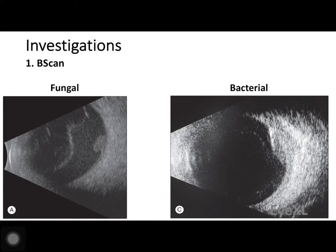For investigations, a B-scan ultrasound of the entire eyeball is performed to examine the posterior segment. On B-scan, fungal endophthalmitis shows a fungating, mushroom-shaped exudate growing into the vitreous from the posterior segment. Bacterial endophthalmitis, by contrast, shows a flatter exudate that sticks to the retina or subretinal region without growing into the vitreous. This is a very characteristic distinguishing feature between the two types.